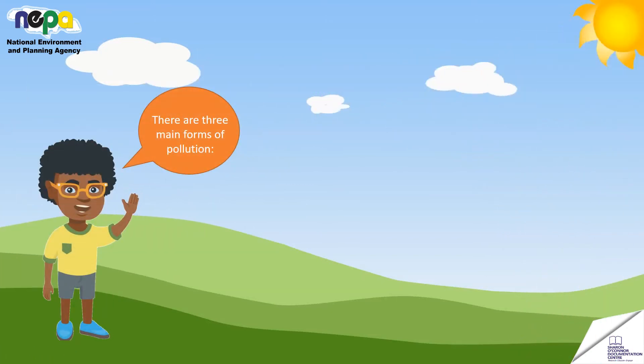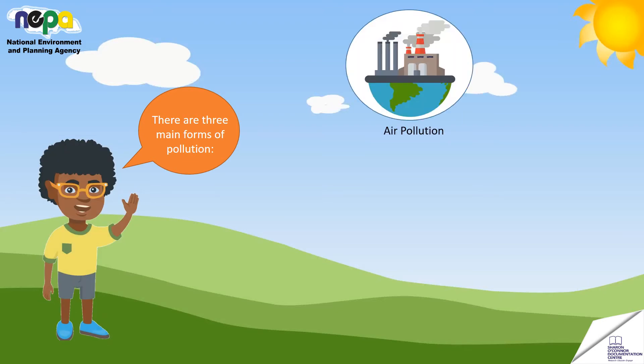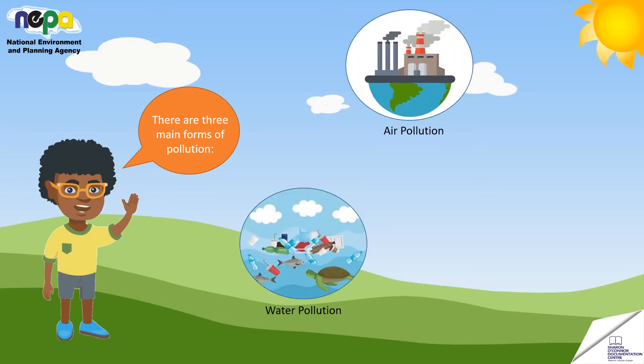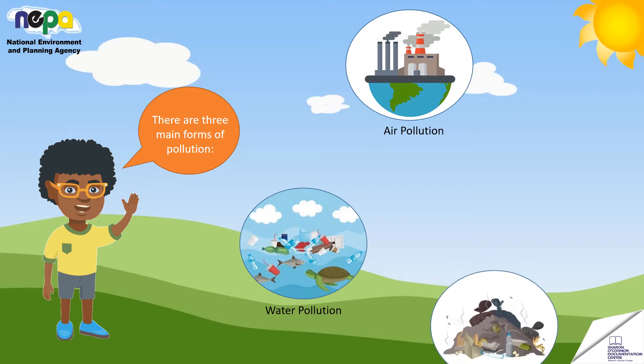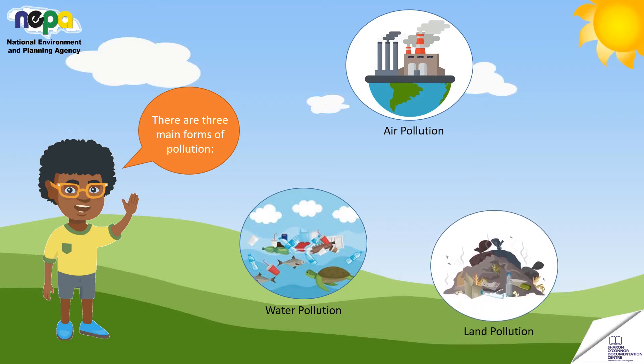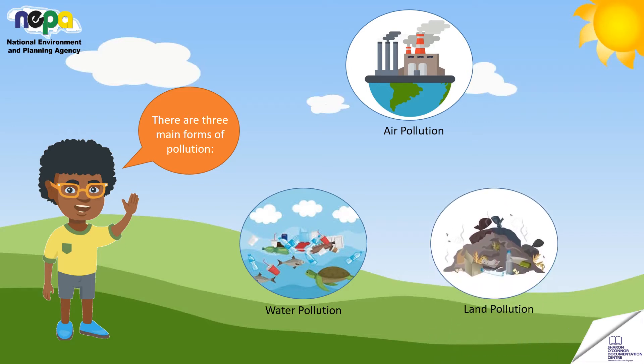There are three main forms of pollution: air pollution, water pollution, and land pollution.